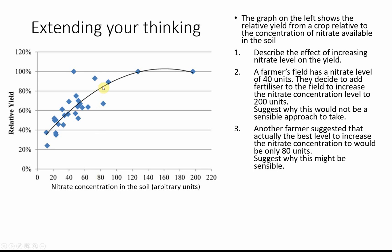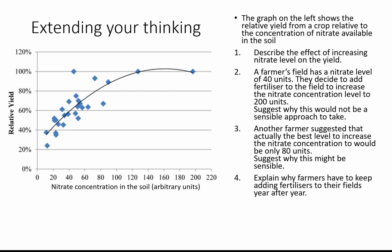For why 80 units might be the best level: the graph starts to level off after that point, so you'd have to add quite a lot more fertiliser to get only a small increase in yield. This probably becomes unprofitable — you'd be spending more money than you gain in extra yield, so profit margin goes down. That's why farmers often won't apply as much nitrate as they possibly could to get the maximum yield, because of cost-benefit analysis.